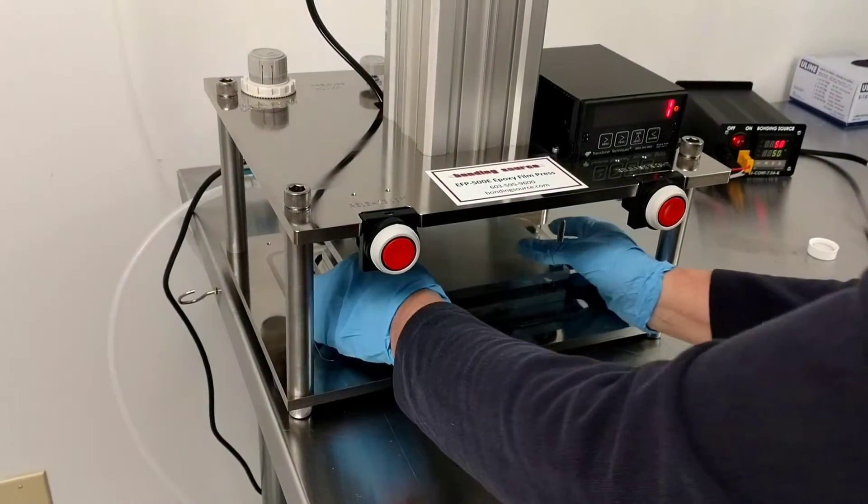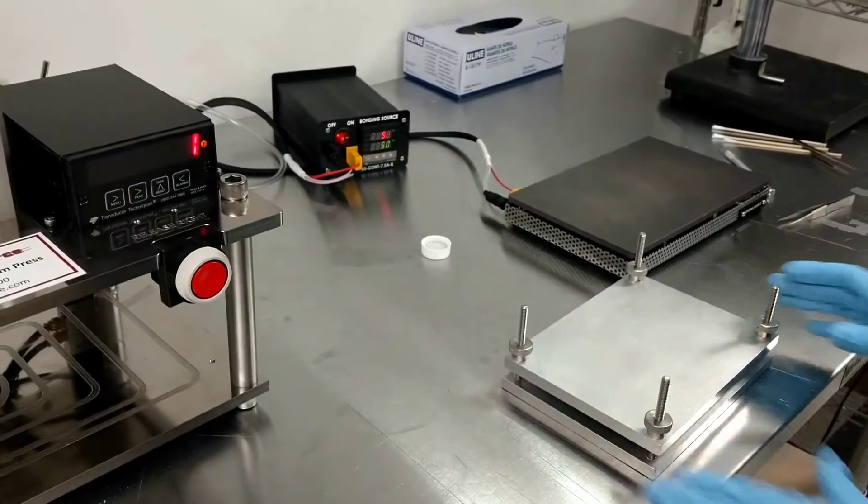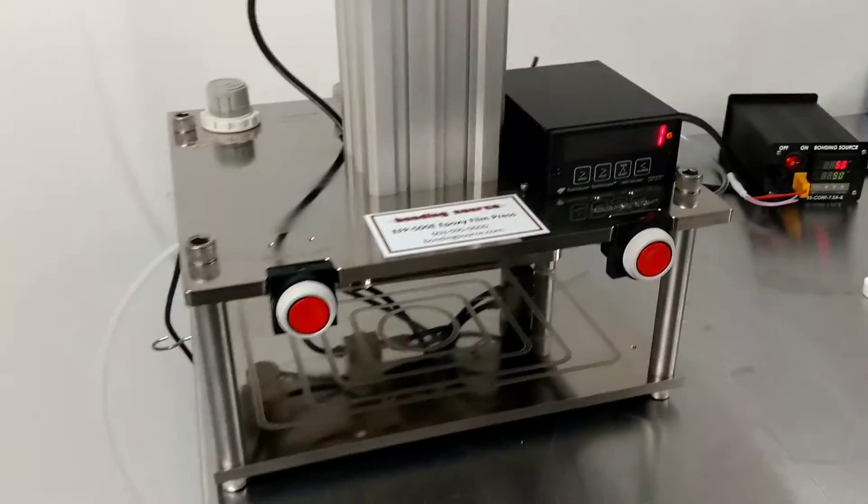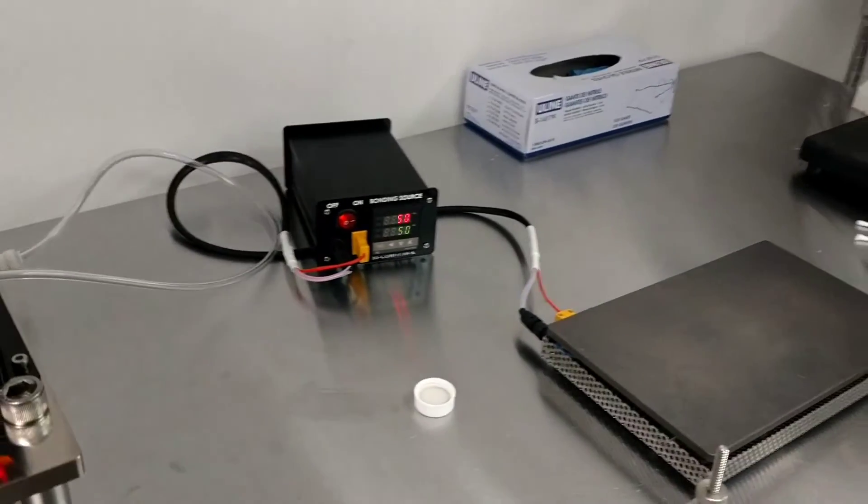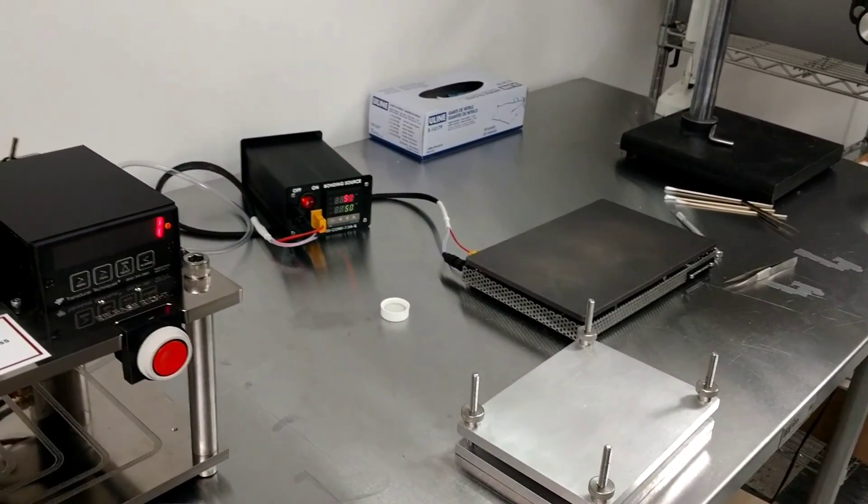And now you take this fixture and you stick it in your curing oven for the recommended cure schedule and you're good to go. Bonding Source sells the epoxy presses. We sell the holding fixtures, the hot plate, and the controller. We also make preforms and sell sheet stock. Give us a call with any questions. Thank you.